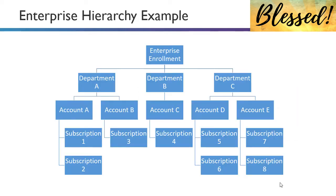Looking at the enterprise hierarchy example in more detail: you have your enterprise enrollment, departments A, B, and C — perhaps finance, HR, or IT — inside your EA. Then you can have sub accounts for dev, for test, and within those, various subscriptions that you want to manage and put resources in.